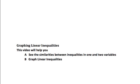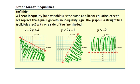Graphing linear inequalities. This video will help you see the similarities between inequalities in one variable and two variables and graph linear inequalities. Let's start with a definition. A linear inequality in two variables is the same as a linear equation except we replace the equal sign with an inequality sign. The graph is a straight line that is either solid or dashed, with one side of the line shaded. Let's take a look at some examples.